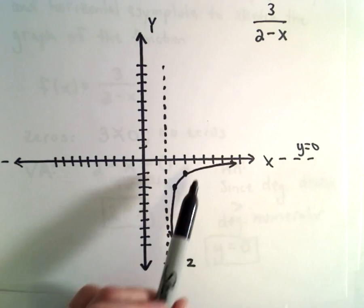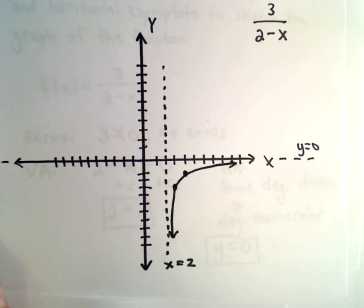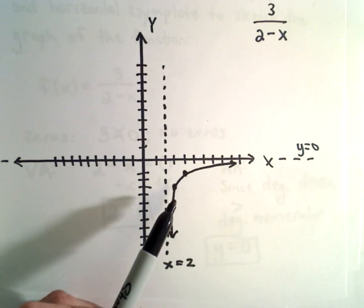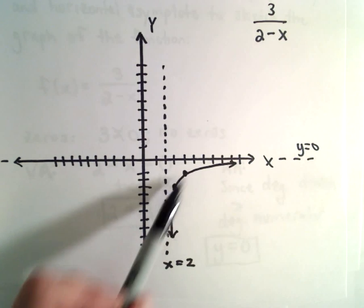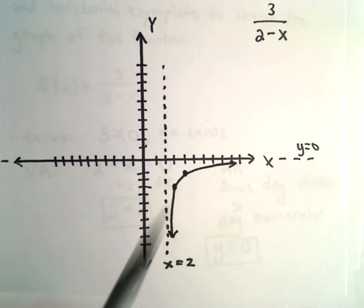So remember, a rational function can cross its horizontal asymptote. It doesn't have to, like this example shows. But in this case, we said there's no zeros, which means it doesn't cross.